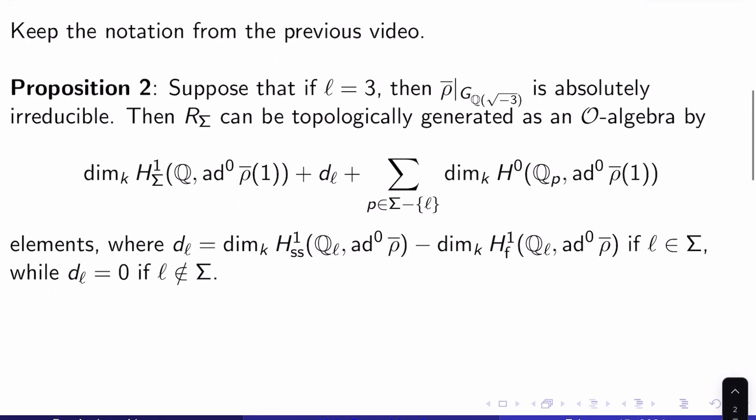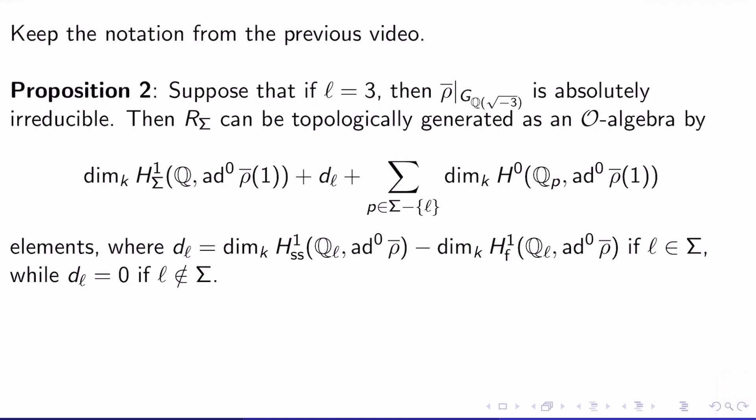So let's keep the notation from the previous video. Proposition 2: Suppose that if the prime l from the last video is 3, then ρ̄, the plausibly modular representation we've been given, when restricted down to the Galois group of Q adjoin root negative 3, is absolutely irreducible.